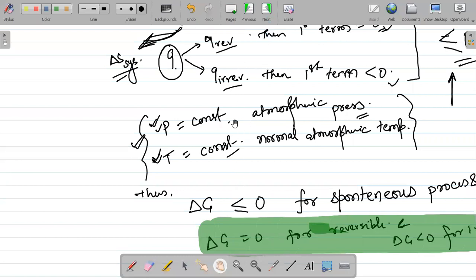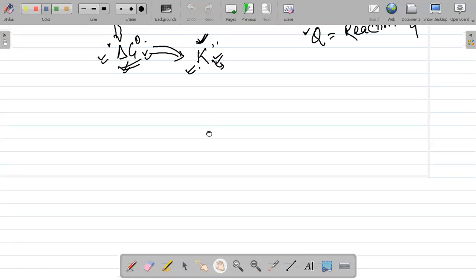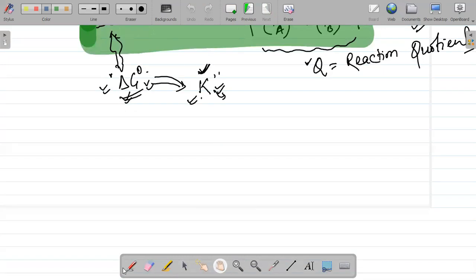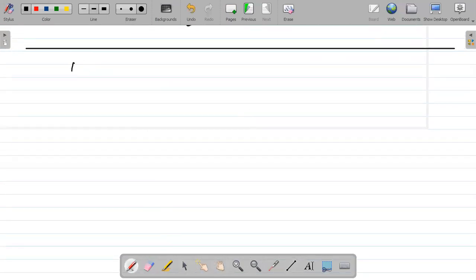I can write A is equal to U minus TS or dA is equal to dU minus delta S, TdS minus SdT.